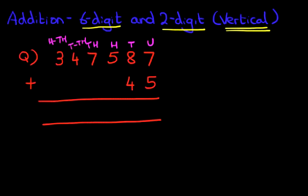Okay, we are now ready to do the addition. As always we start with the column on the right hand side first. Units is 7 plus 5. 7 plus 5 is 12. Let's write that down.